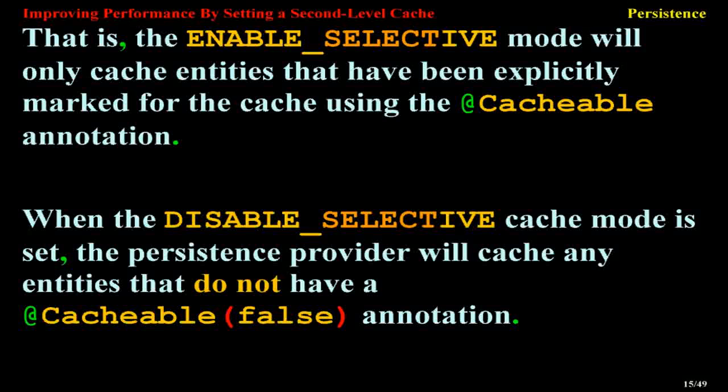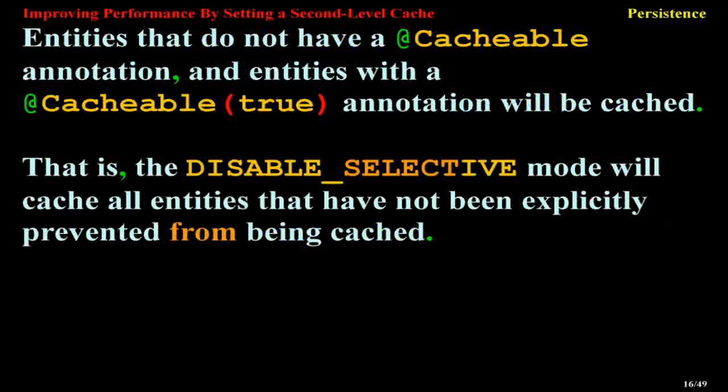When the DISABLE_SELECTIVE cache mode is set, the persistence provider will cache any entities that do not have a @Cacheable(false) annotation. Entities that do not have a @Cacheable annotation and entities with a @Cacheable(true) annotation will be cached. That is, the DISABLE_SELECTIVE mode will cache all entities that have not been explicitly prevented from being cached.